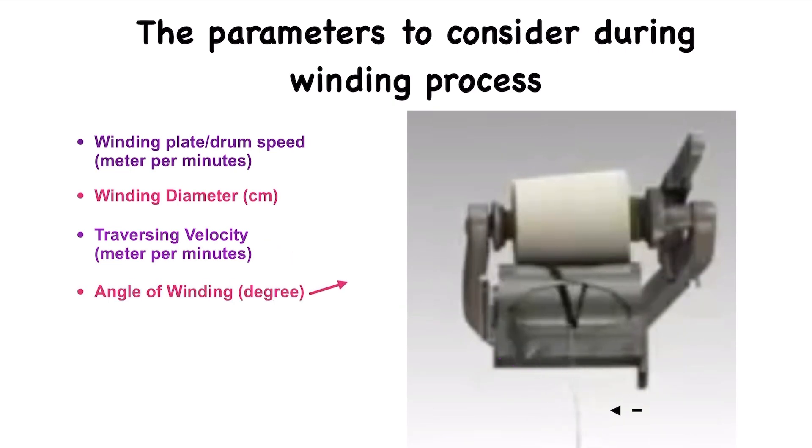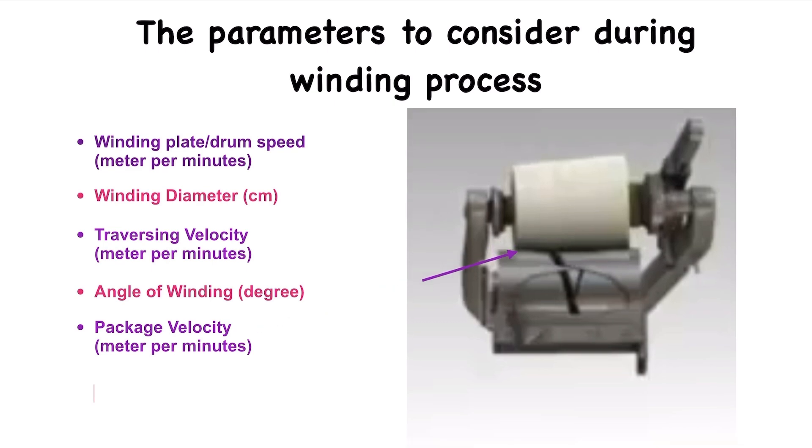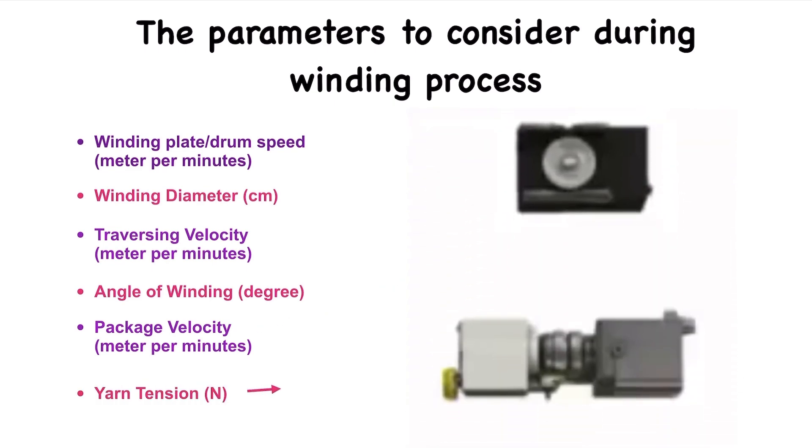Angle of winding is the angle in degrees the yarn is laid on the cone or large package. Package velocity is the speed with which the package rotates and is measured in meter per minutes. Yarn tension is the tension that needs to be maintained in order to make sure that the yarn on the large package is not too tight or too loose. It is measured in newtons.